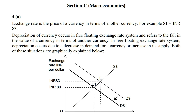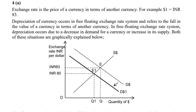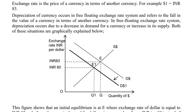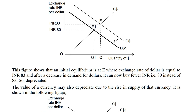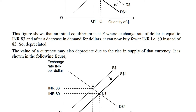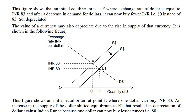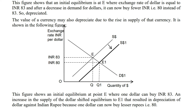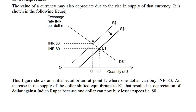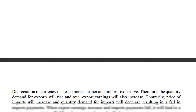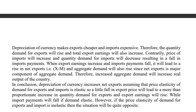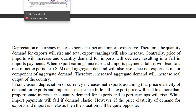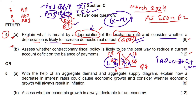You can see the exact answer in Section C, question number 4A. Stop the video, read the answer or take a screenshot. You have to make the graph — this shows a leftward shift in the demand curve and a rightward shift in the supply of dollars, with the dollar falling from 83 to 80 Indian rupees. Always explain your graph and provide a conclusion. That completes Part A of question 4. Now moving to question 4B.